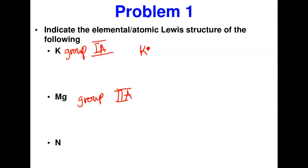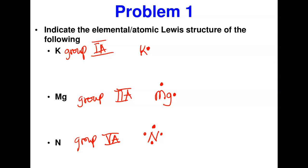For magnesium with two dots, put one dot on one side and another on a different side — clean it up so it looks clear. Nitrogen belongs to group 5A, so it has five electrons. We place one dot on each of the four sides first — that's four — and the fifth electron goes on any side you choose, giving it one paired side.